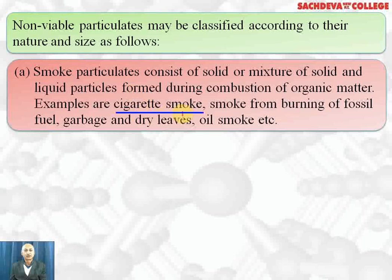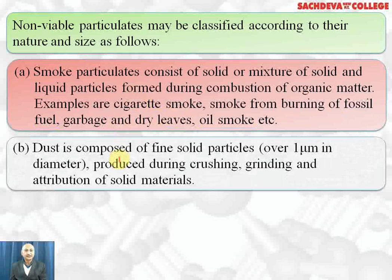Examples of smoke particulates include cigarette smoke, smoke from burning fossil fuels, garbage and dry leaves, and oil smoke. They all form smoke particulates. Dust is composed of fine solid particles over one micrometer — micrometer means 10 to the power minus 6 meter — in diameter.